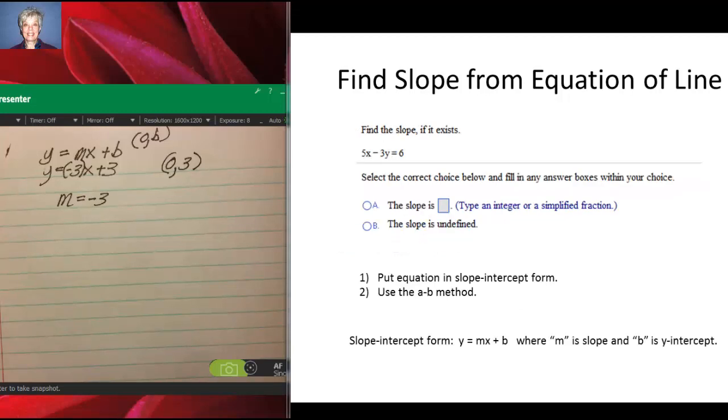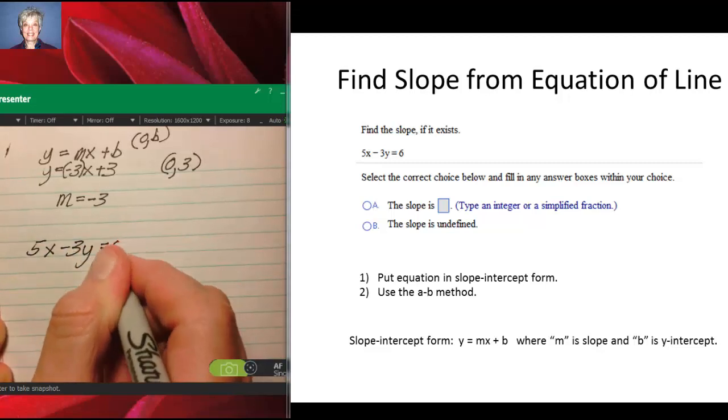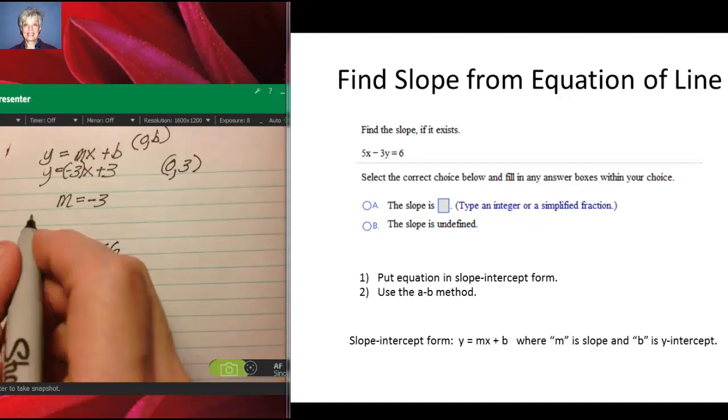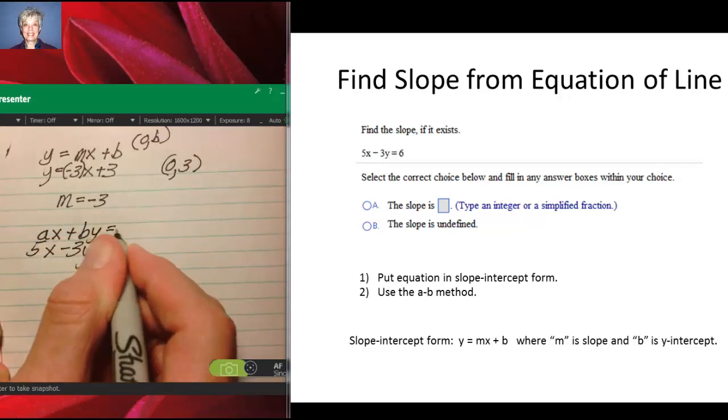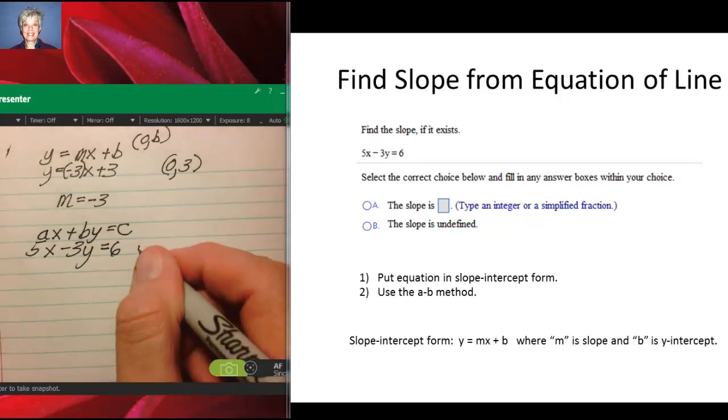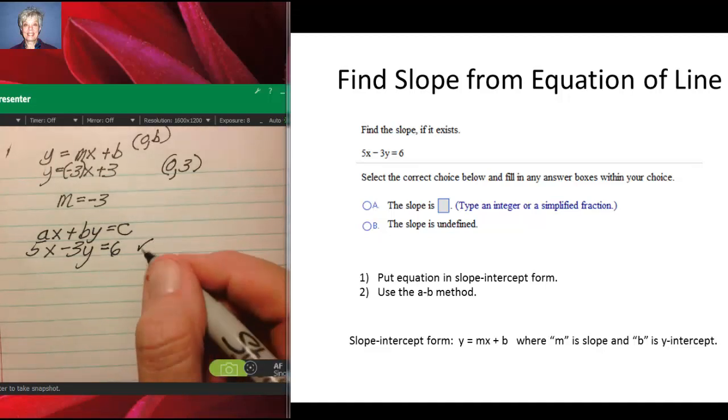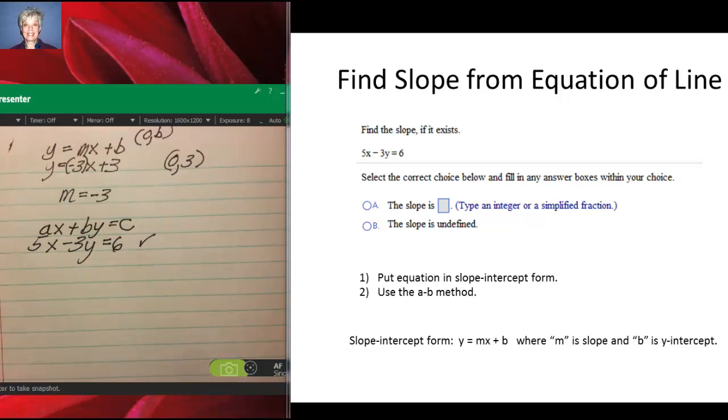Here's our next equation. Find the slope, if it exists, of the line 5x - 3y = 6. This is in a form that we call standard form. The formula for standard form is ax + by = c. If you want to easily know what the slope is, you have to solve for y and put this in slope-intercept form. It's also important to know that you cannot graph this on your graphing calculator. You have to have your equation in y equals form, the slope-intercept form. So let's do it. Let's subtract the 5x term from both sides.